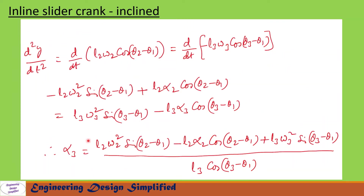To find the angular acceleration of the coupler link, we differentiate y with respect to time twice. After differentiating and rearranging, alpha 3 (angular acceleration of the coupler link) equals [L2 · omega 2² · sin(theta 2 − theta 1) − L2 · alpha 2 · cos(theta 2 − theta 1) + L3 · omega 3² · sin(theta 3 − theta 1)] divided by L3 · cos(theta 3 − theta 1).